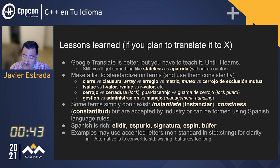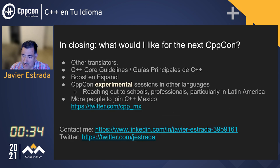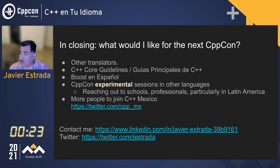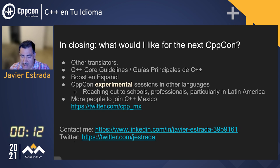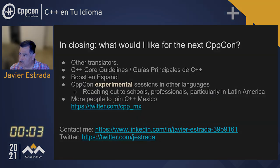If you want to translate, particularly in Spanish, you may use accented letters — it's easier than having to do the alternative. In closing, I want to recruit other translators. I would like to start C++ Core Guidelines in Spanish, Boost in Spanish, more sessions in different languages other than English — particularly to reach schools in Latin America — and more people to join C++ Mexico. There is a group that is ongoing, and you can contact me through those two contact information pieces. Thank you very much.